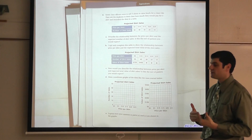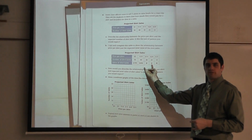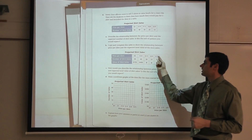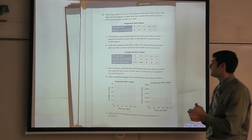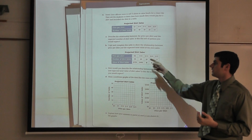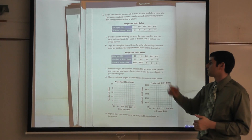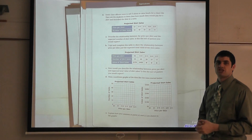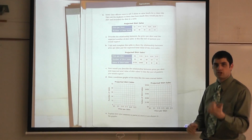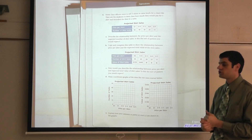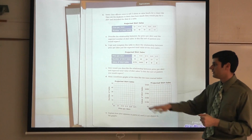Whether I charge ten or twenty dollars I still bring in $400, and whether I charge five or twenty-five dollars I still bring in $250. But charging fifteen dollars with thirty students brings in $450 — that's the best outcome. So yes, we definitely see a change in income based on the price charged and how many people are buying.